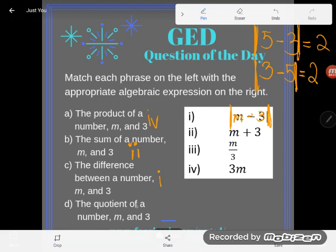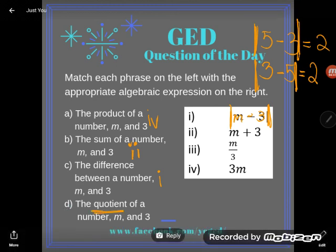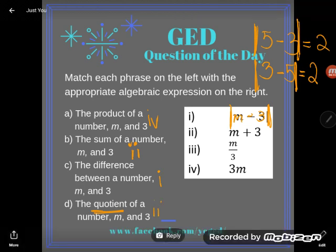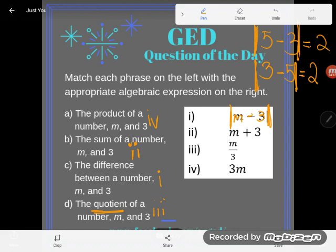Okay, then D says the quotient, the quotient of a number m and 3, so I'd like to take m and divide it by 3. Quotient means a division expression and so 3 is the correct answer here.